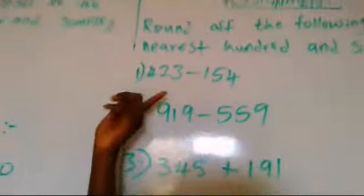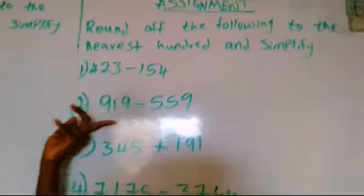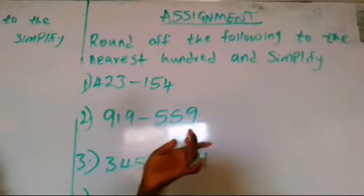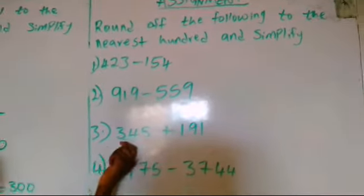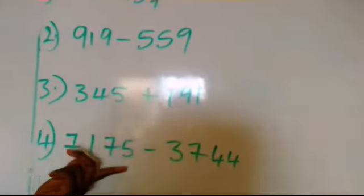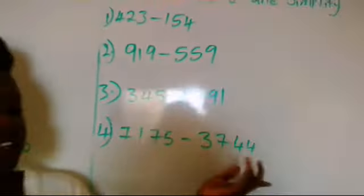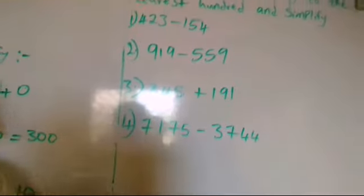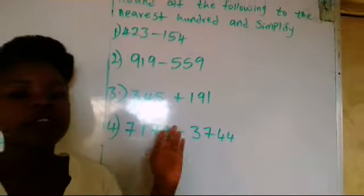Now, we have an assignment here for you. It says round off the following to the nearest 100 and simplify. We have 423 minus 154, 919 minus 559, 345 plus 191, and 7175 minus 3744. We are rounding all of them to the nearest 100.